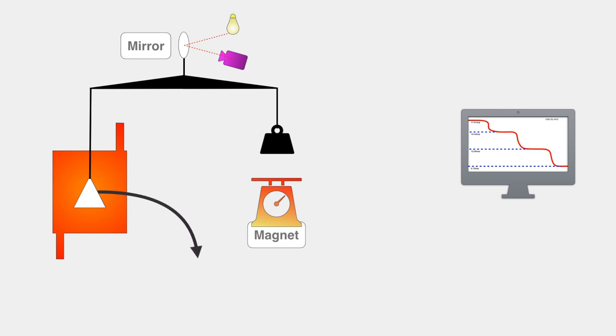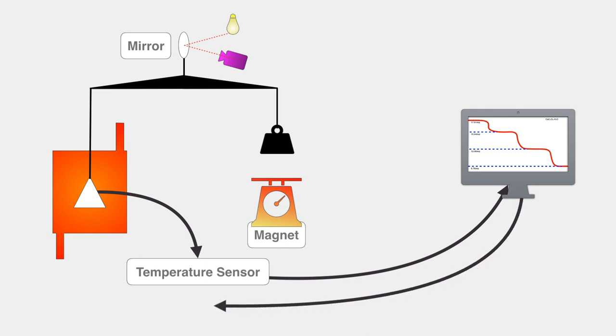So let's discuss working of this instrument. First of all, the temperature of the sample is sensed by the temperature sensor that is thermocouple. This temperature is sent to the computer and computer sends the information to the temperature controller to increase the temperature.